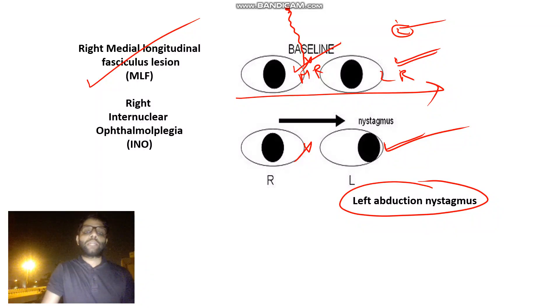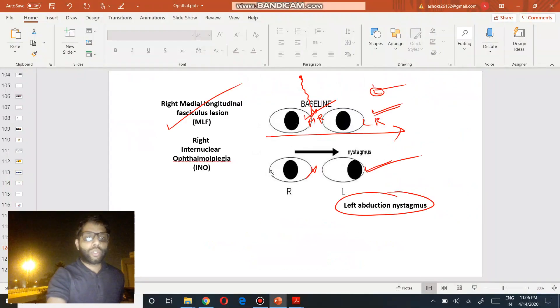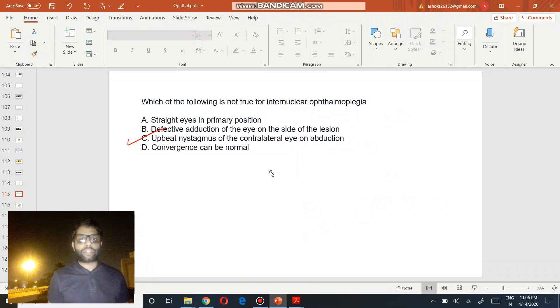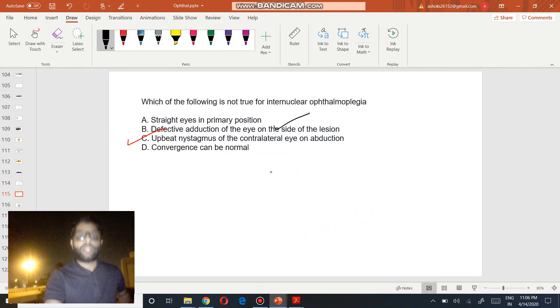Most common cause in youngs, multiple sclerosis. In elderly people, vascular lesions like diabetes mellitus. Okay, that was the answer to today's question. Straight eye is in primary position. Defective adduction of the side of the lesion. Horizontal nystagmus, that is incorrect. And convergence can be normal. Yes, in one of the times there is a posterior lesion, then convergence is normal. But if there is an anterior lesion, convergence can be affected. So that is also extra point to be remembered. Okay, but extra point I will tell you today.